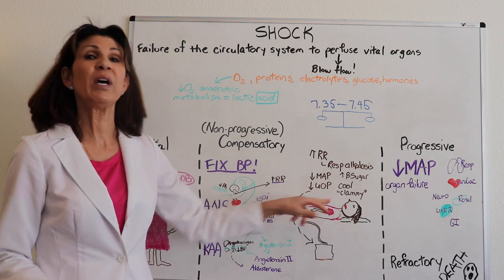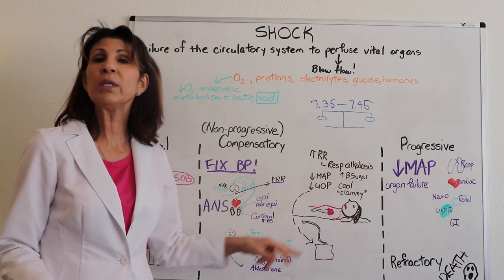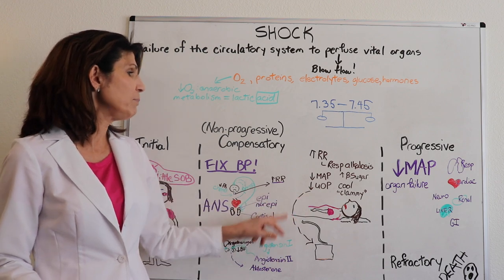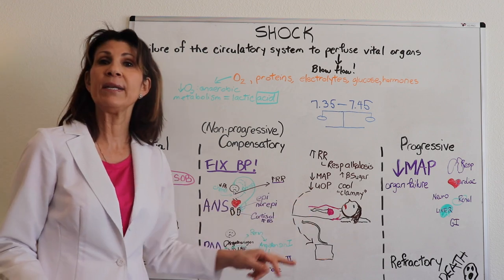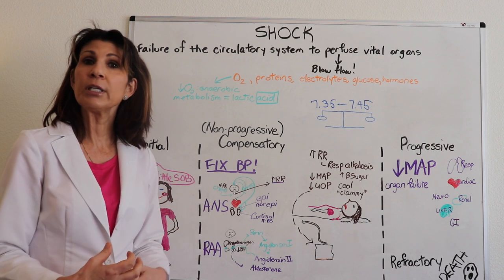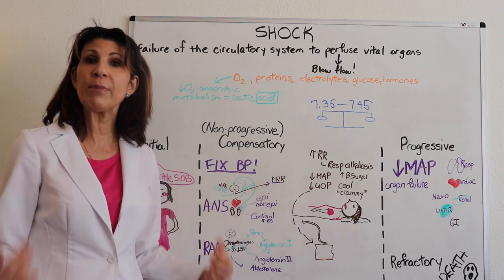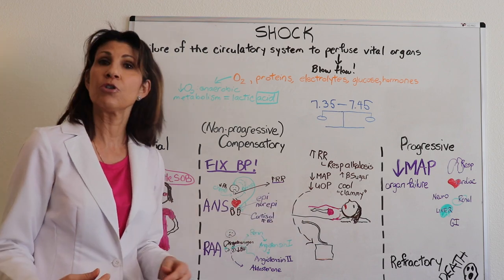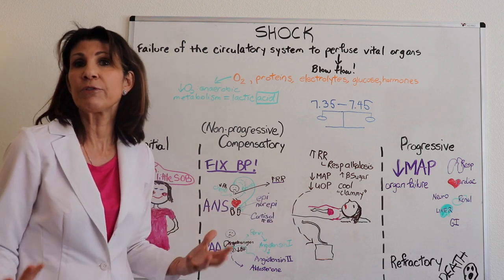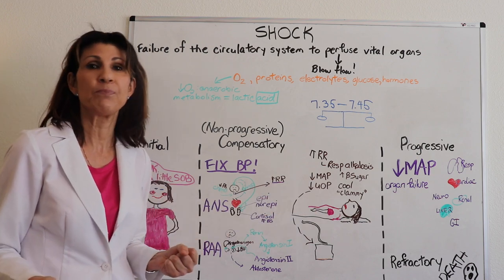The patient will also appear cool and clammy. Those are effects of epinephrine and norepinephrine shunting blood to the central circulation, so the extremities become cooler. A sympathetic nervous system response also causes diaphoresis, making the patient appear clammy.